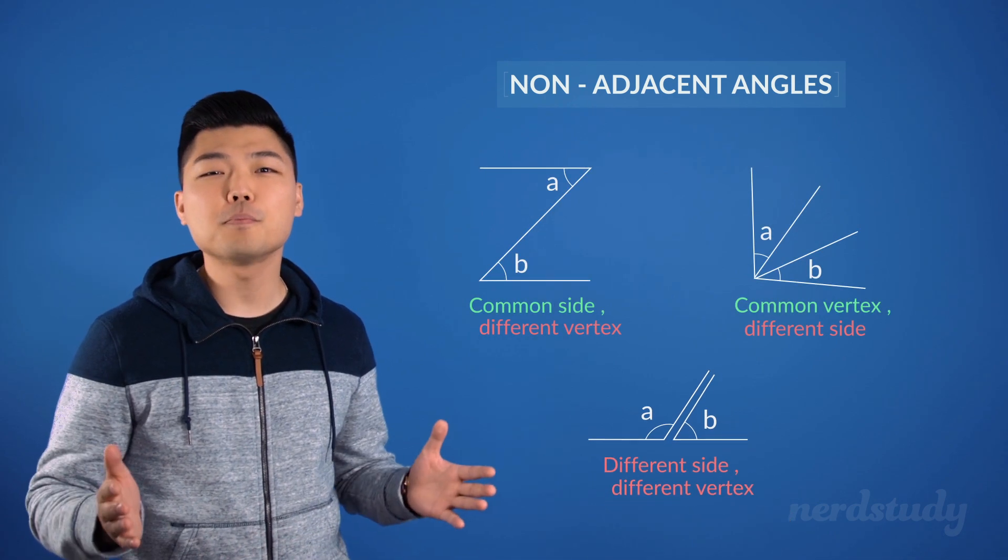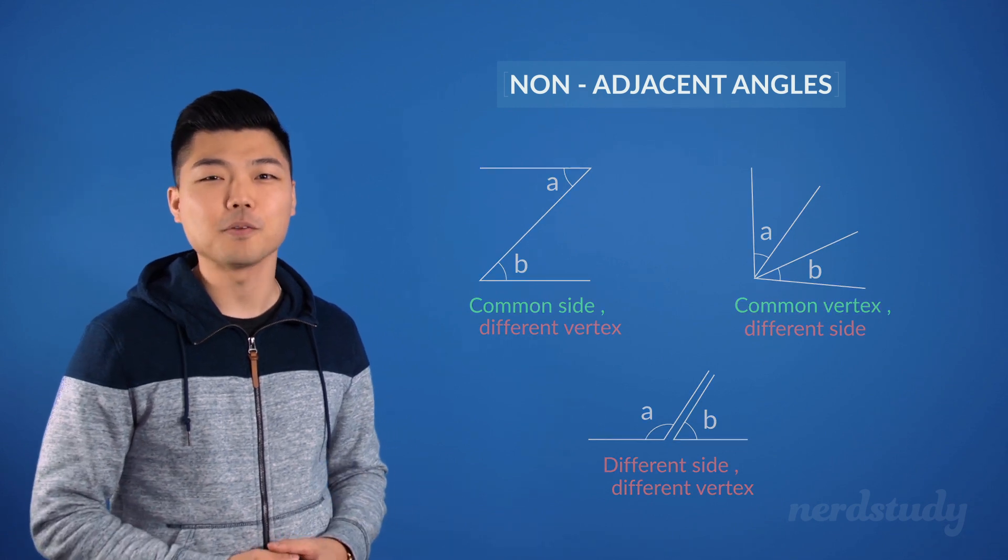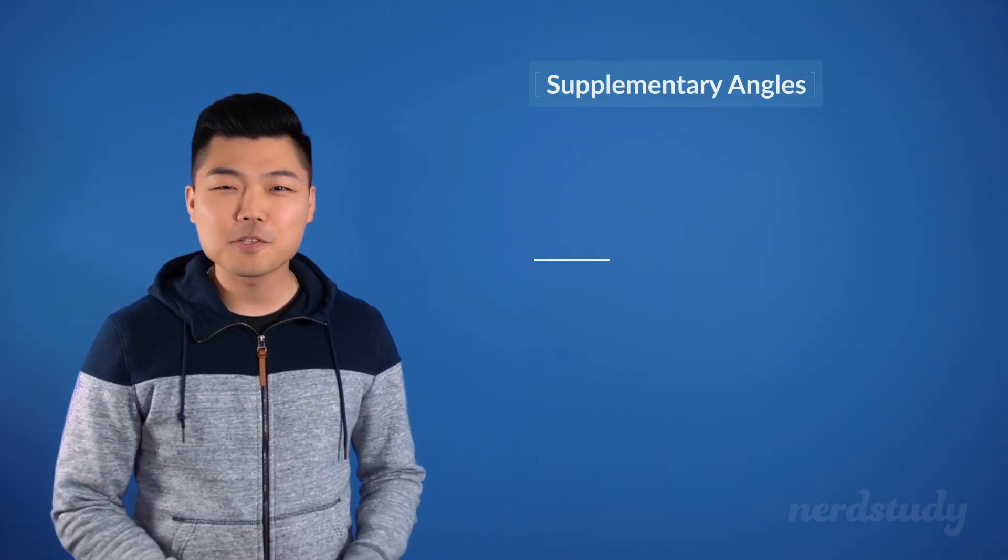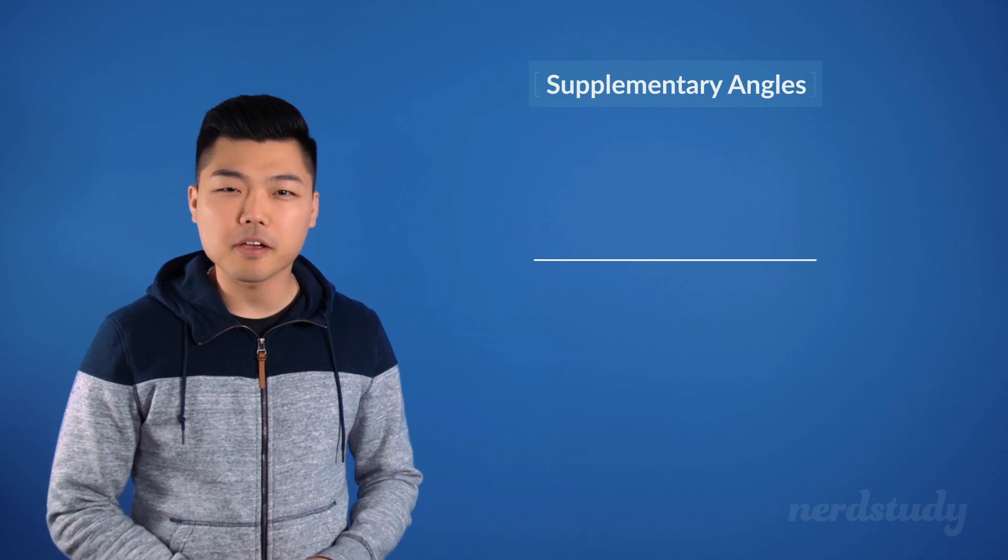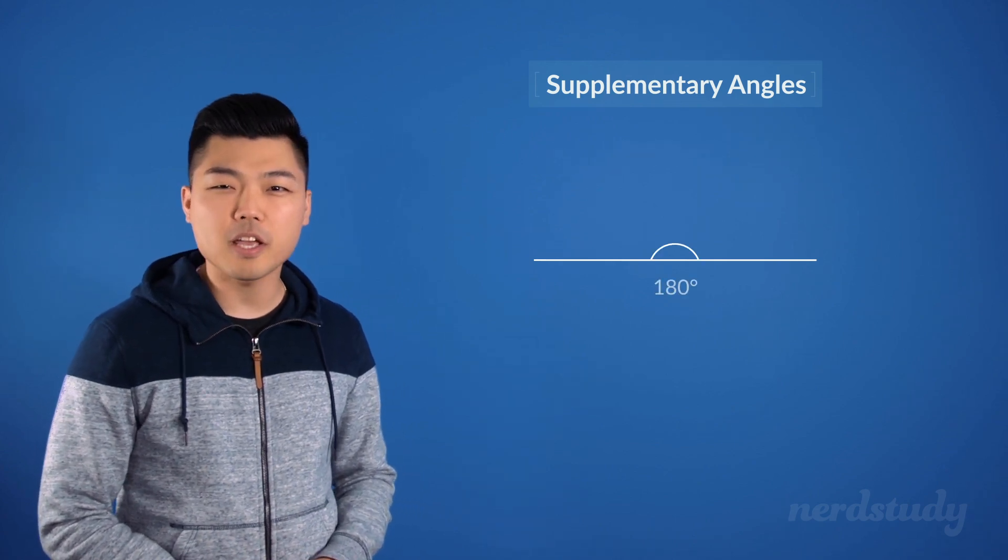Great, so let's move on to supplementary angles. Two angles are considered supplementary angles if they add up to 180 degrees.